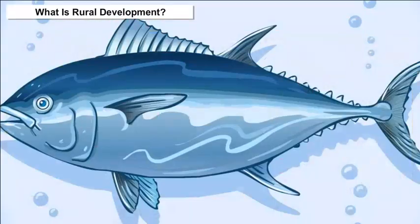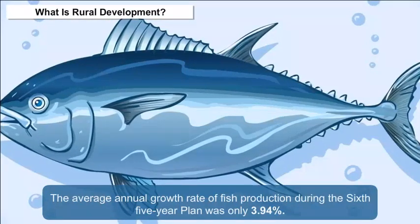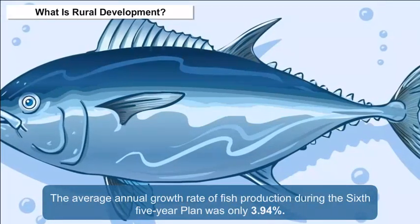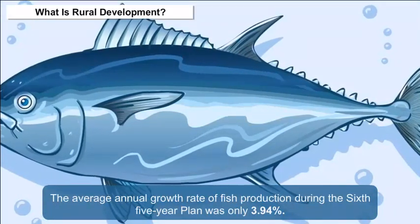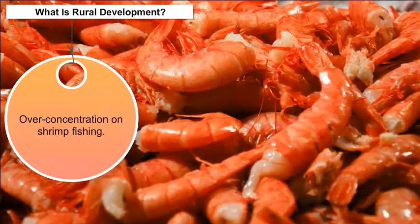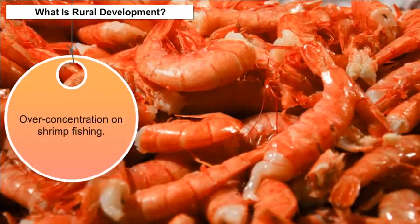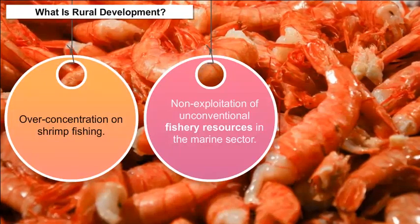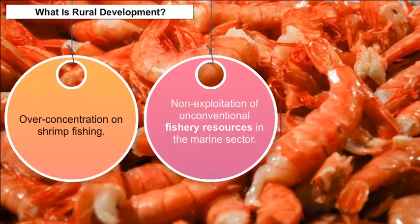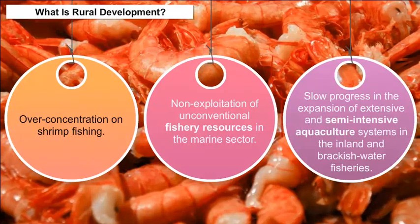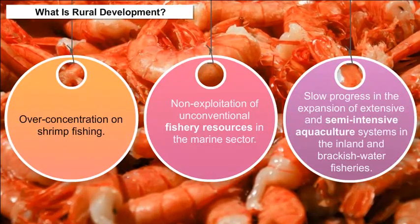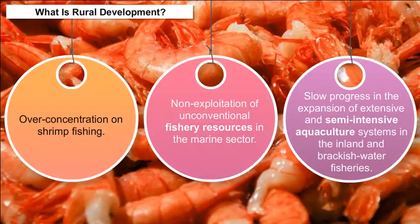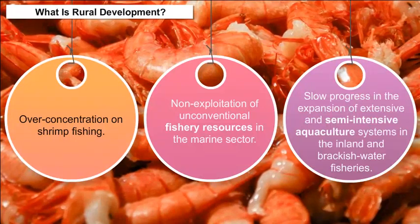The average annual growth rate of fish production during the 6th Five-Year Plan was only 3.94%. The major constraints were over-concentration on shrimp fishing, non-exploitation of unconventional fishery resources in the marine sector, and slow progress in the expansion of extensive and semi-intensive aquaculture systems in inland and brackish water fisheries.